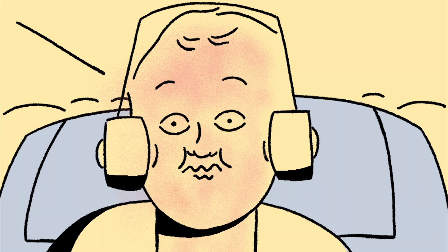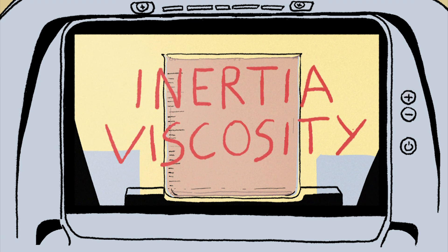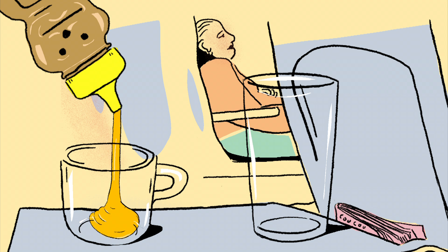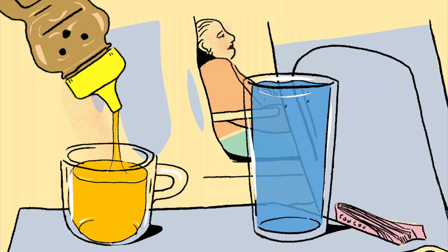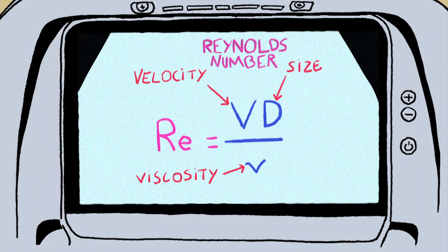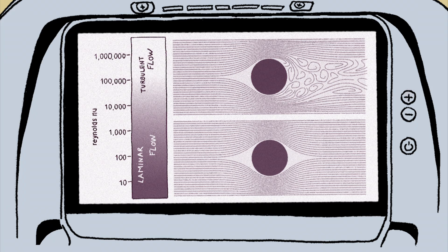But why does it happen? In every flowing liquid or gas, there are two opposing forces— inertia and viscosity. Inertia is the tendency of fluids to keep moving, which causes instability. Viscosity works against disruption, making the flow laminar instead. In thick fluids such as honey, viscosity almost always wins. Less viscous substances like water or air are more prone to inertia, which creates instabilities that develop into turbulence. We measure where a flow falls on that spectrum with something called the Reynolds number, which is the ratio between a flow's inertia and its viscosity. The higher the Reynolds number, the more likely it is that turbulence will occur.